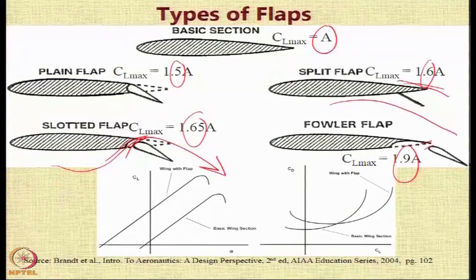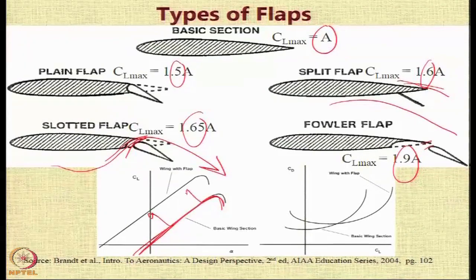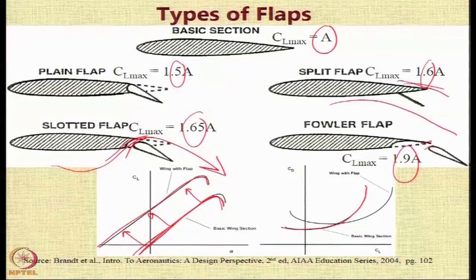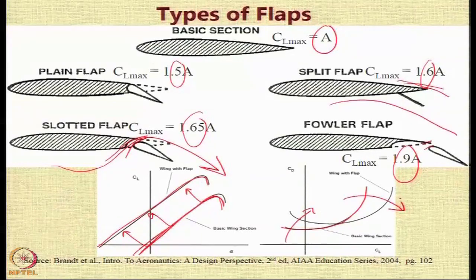If you look at a basic wing section, the lift curve over the basic wing section — using a flap leads to a parallel line, and at all angles it increases the lift. Similarly, if you look at the CD versus CL curve, with a basic wing line as shown, you get a tilt when you include flaps in the aircraft.